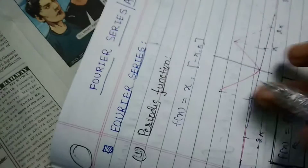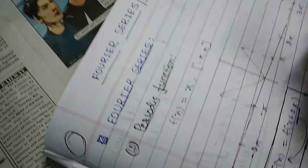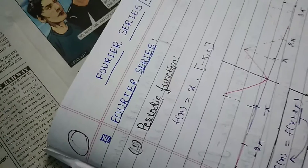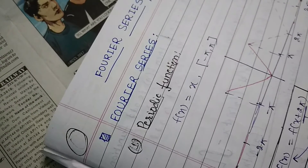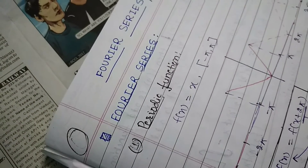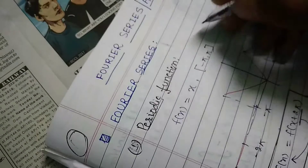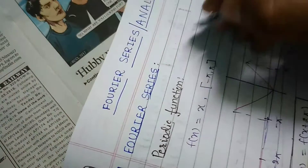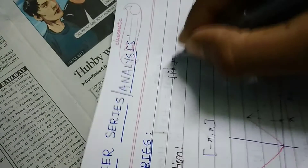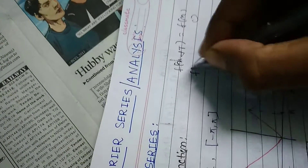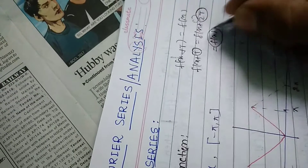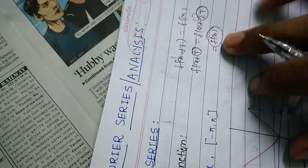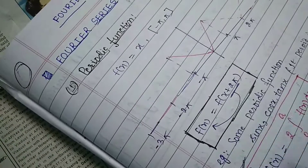In Fourier series, first of all we have to know about periodic functions. Periodic functions are those functions which repeat their value in a certain interval. If T is the period, then f(x + T) = f(x), or f(x + 2T) = f(x) — meaning at every T or 2T interval it repeats the same value.